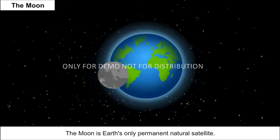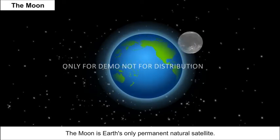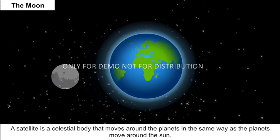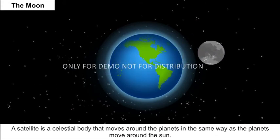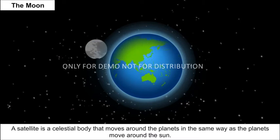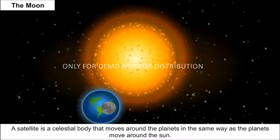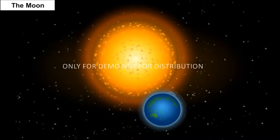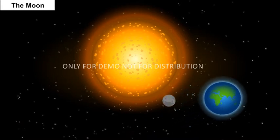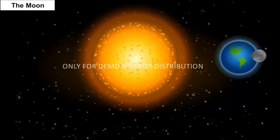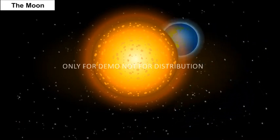The Moon is Earth's only permanent natural satellite. A satellite is a celestial body that moves around the planets in the same way as the planets move around the Sun. The Moon appears so big because it is nearer to our planet than other celestial bodies.